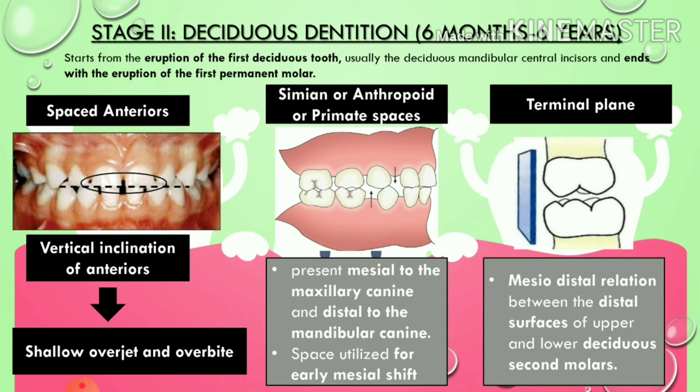Next are simian, anthropoid, or primate spaces — these are spaces present mesial to the maxillary canine and distal to the mandibular canine. As seen in the figure, there is a space mesial to the maxillary canine and a space distal to the mandibular canine. These spaces are called simian, anthropoid, or primate spaces, and they are utilized for early mesial shift.